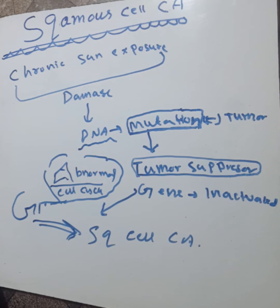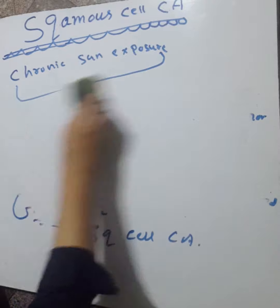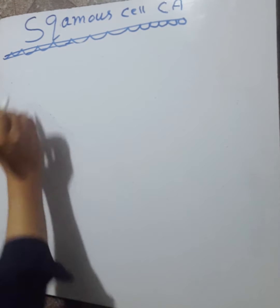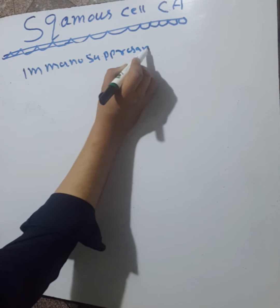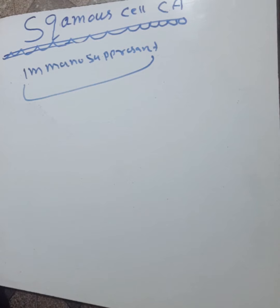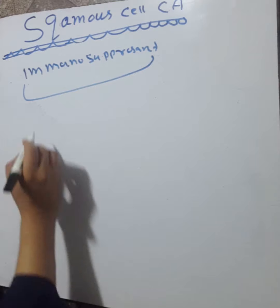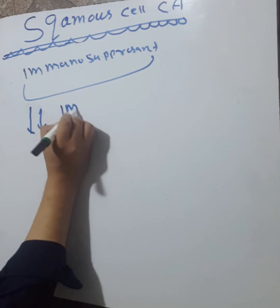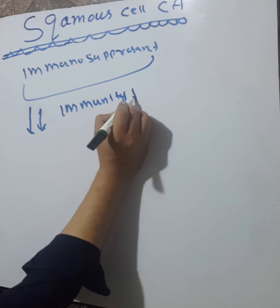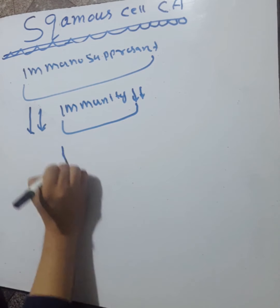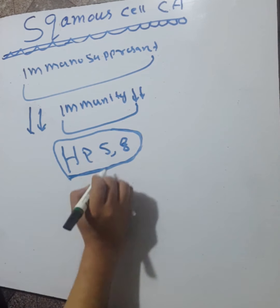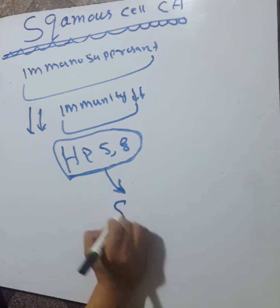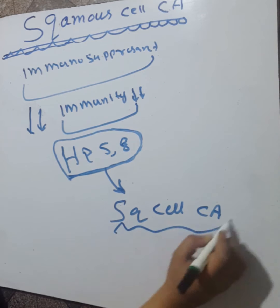Immunosuppression is a higher risk factor for developing squamous cell carcinoma. When the immunity of an individual decreases, it predisposes to human papillomavirus subtypes 5 and 8, which in turn predispose the condition to squamous cell carcinoma.